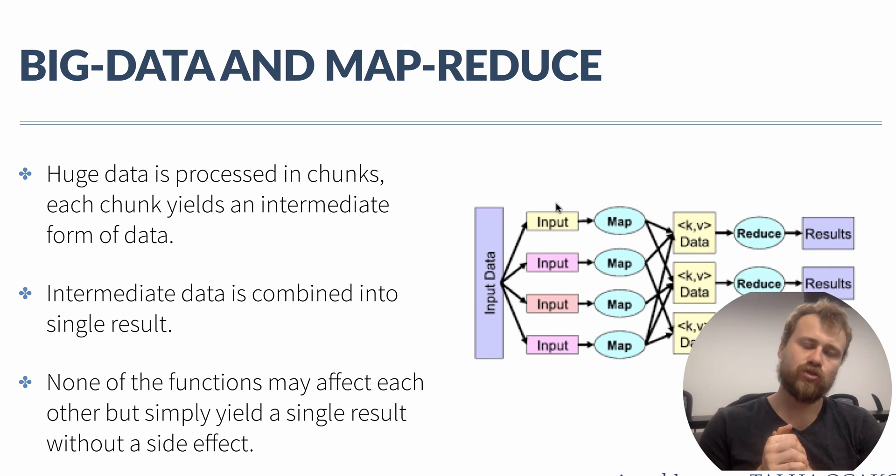So immutability is so important here. Immutability is the core of functional programming, and that's why we are using functional programming immutable objects for resolving big data problems.